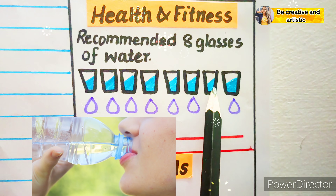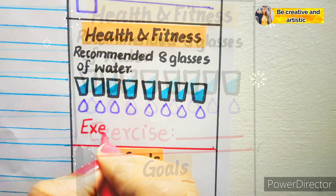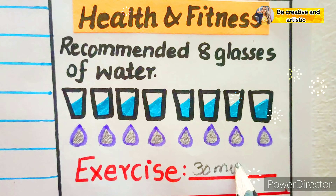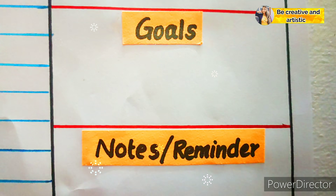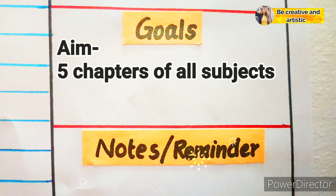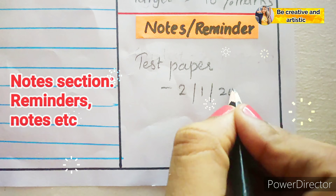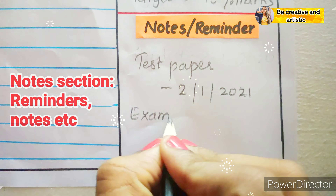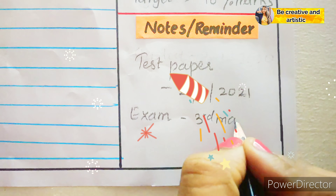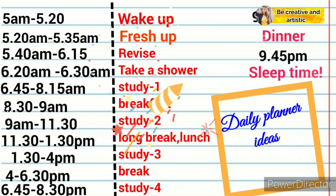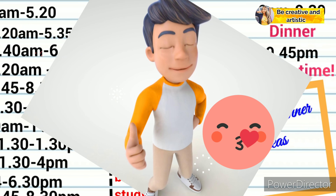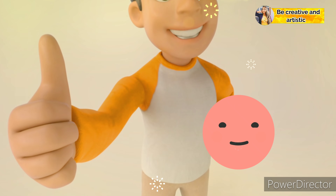Track how many minutes of exercise you have done. The next section is based on your goals: mention how many chapters you will finish today or the score you are targeting for your exam. In the dot section, you can list out your reminders, keywords, and exam timetable. This completes our full study timetable format for exam preparation, revision, or self-study.